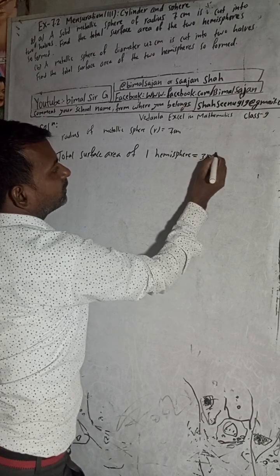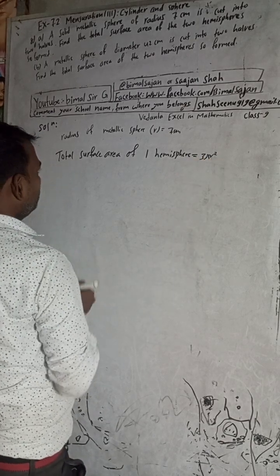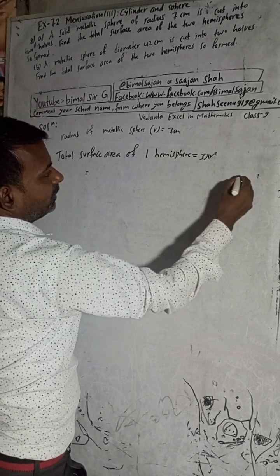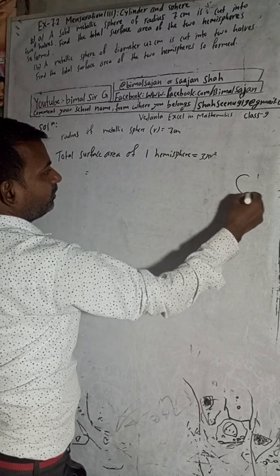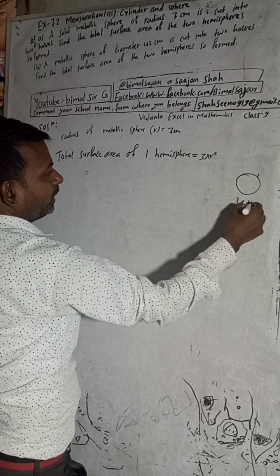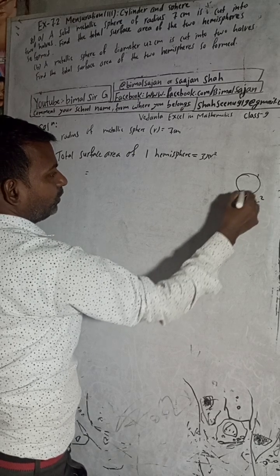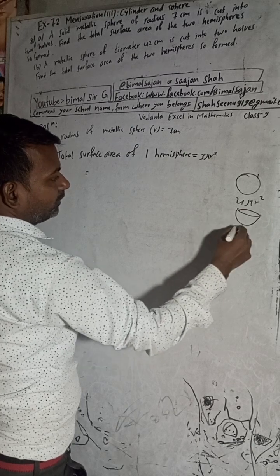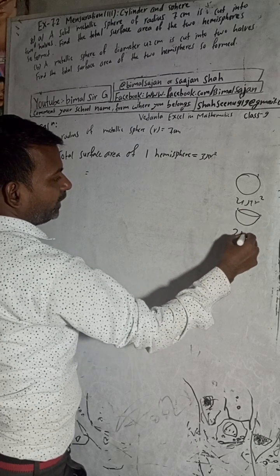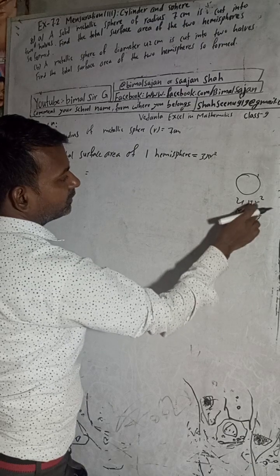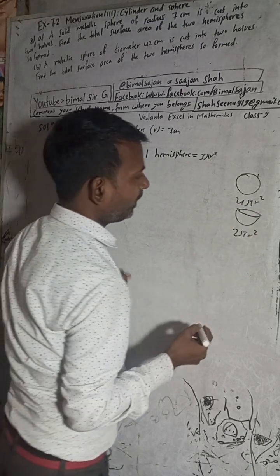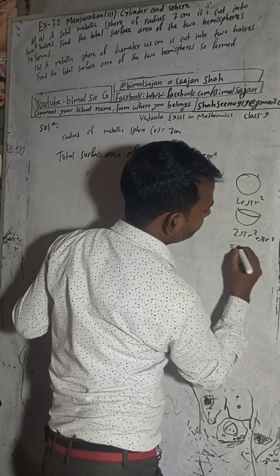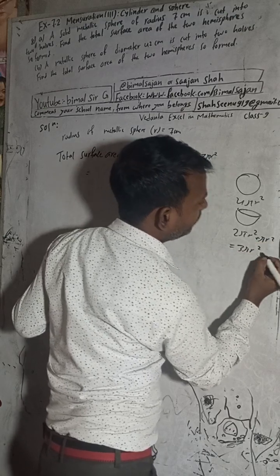Total surface area of one hemisphere will be how much? 3πr². Because total surface area of the sphere is 4πr², and when this is cut into half, the curved surface area is 2πr². And this top part is a circle, so this is πr². That means this will be 3πr².